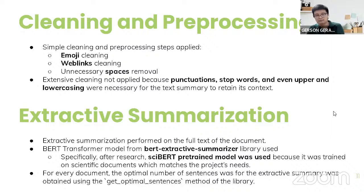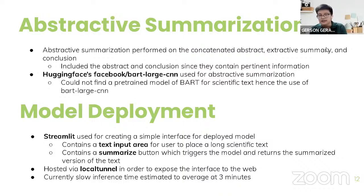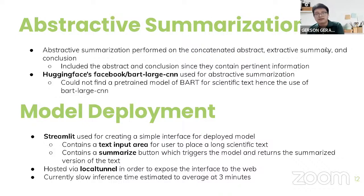For extractive summarization, I performed it only on the full text of each document. I used the BERT transformer model from the BERT Extractive Summarizer library. Specifically, after more research I found a pre-trained SciBERT model trained on scientific documents, which was perfect for my use case. I used the SciBERT pre-trained model to perform extractive summarization, using the method 'get optimal sentences' to determine the optimal number of sentences for each extracted summary.